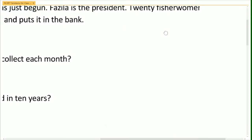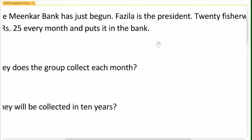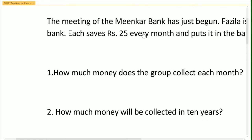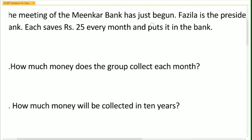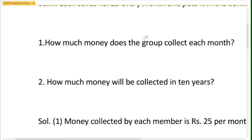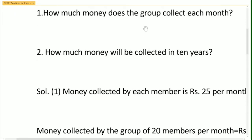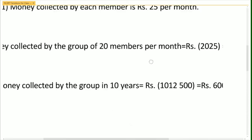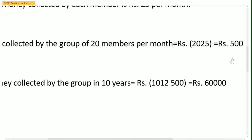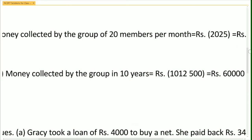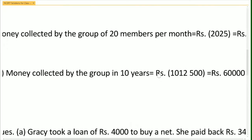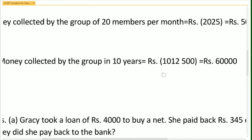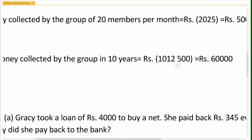20 fisherwomen have made their own group bank. Each saves Rs.25 every month and puts it in the bank. How much money does the group collect each month, and how much will be collected in 10 years? Money collected by the group of 20 members per month is 20 × 25, which is Rs.500. Money collected by the group in 10 years: 10 × 12 × 500, and you will get Rs.60,000.